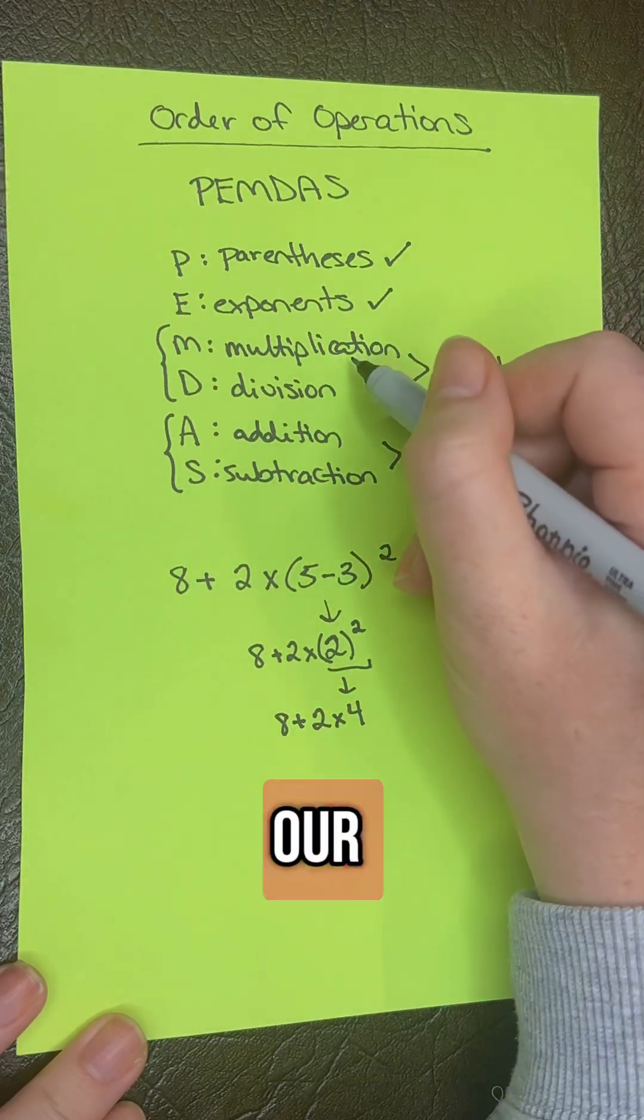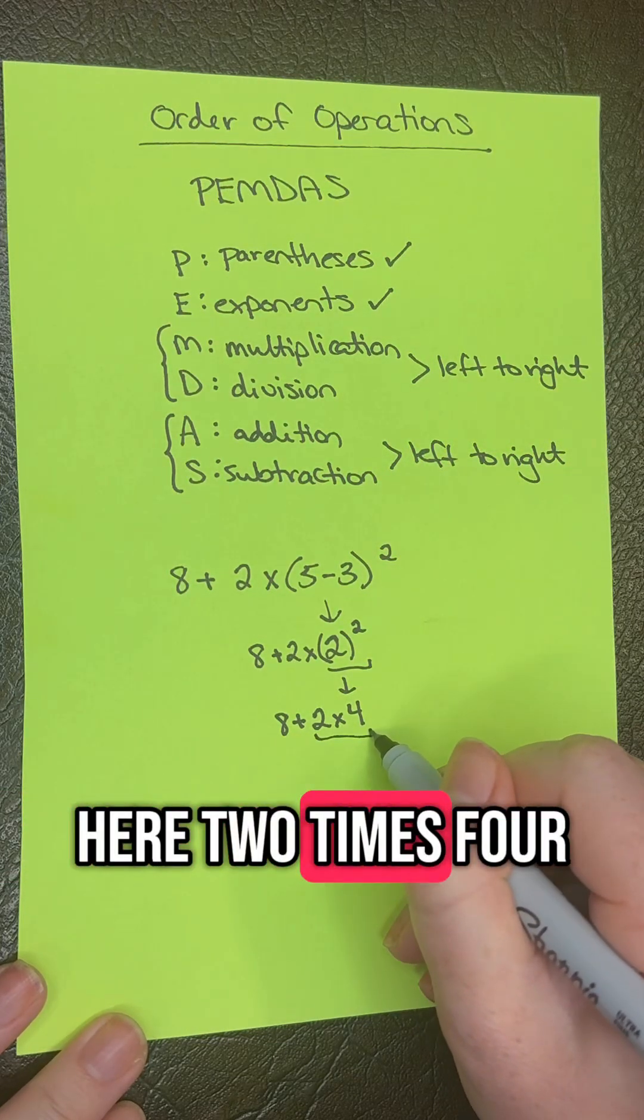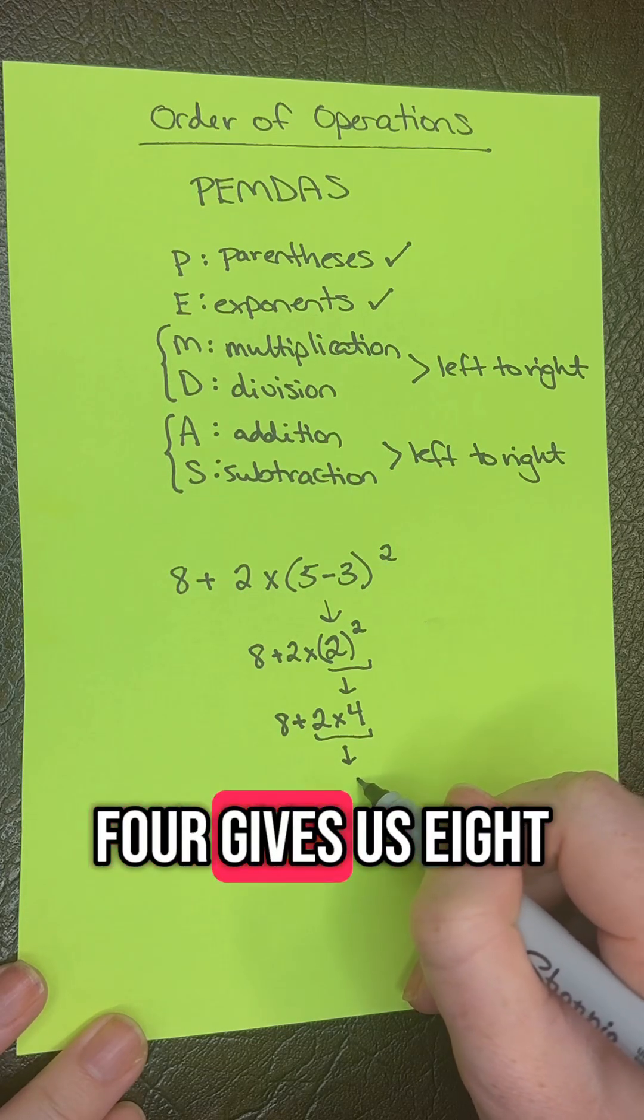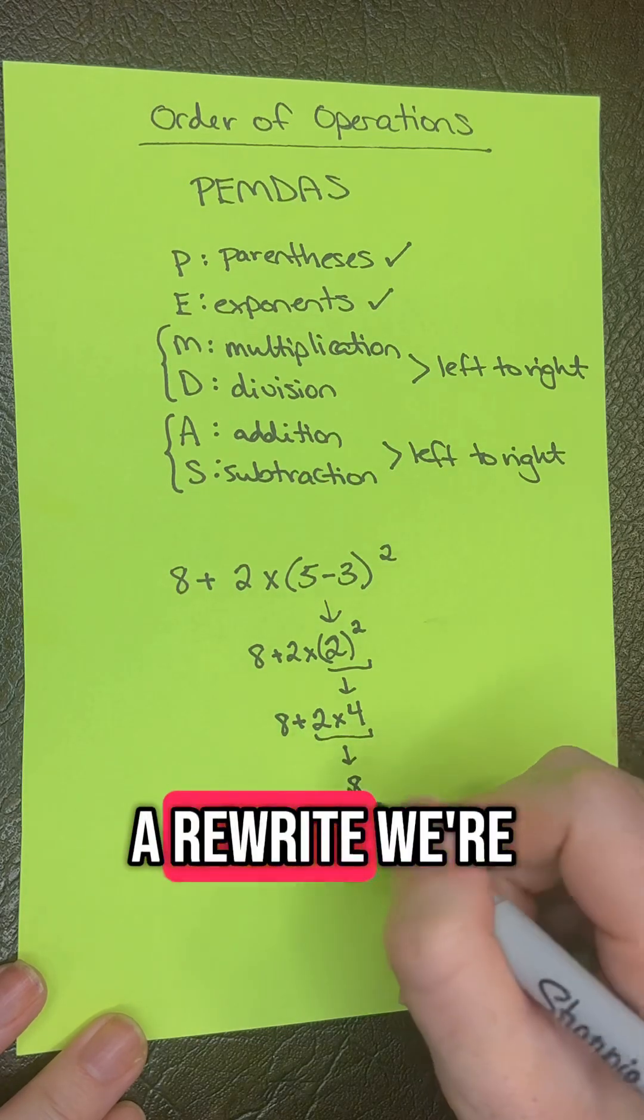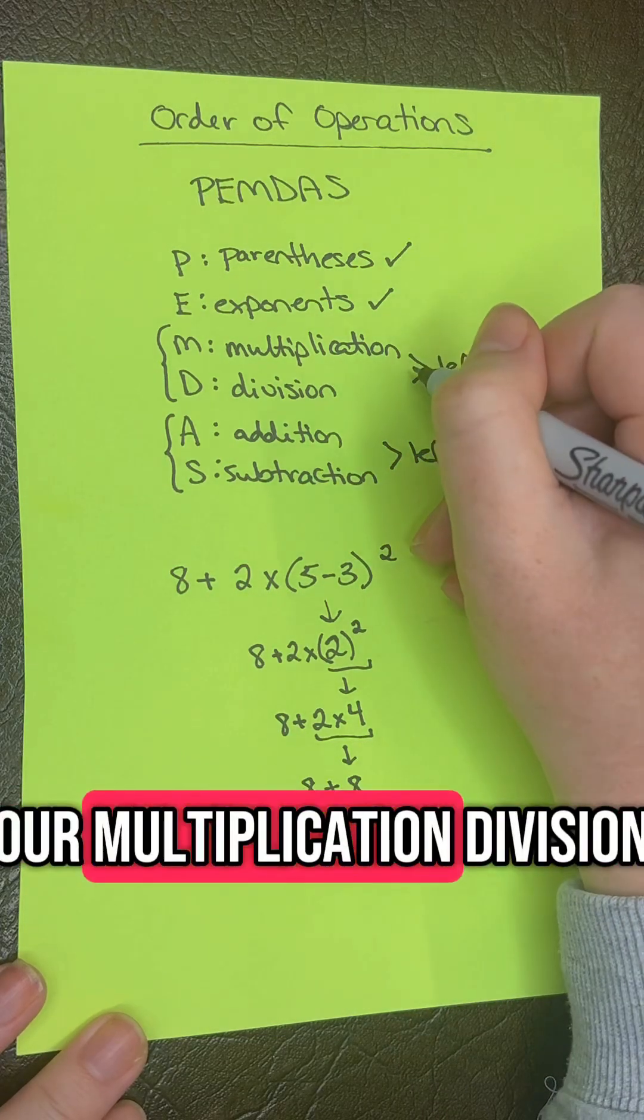Now let's look at multiplication and division. We have 2 times 4, which gives us 8. Let's rewrite: we're left with 8 plus 8. We've done our multiplication.